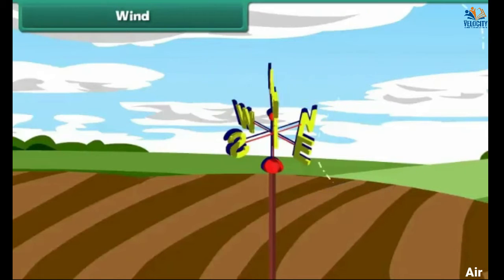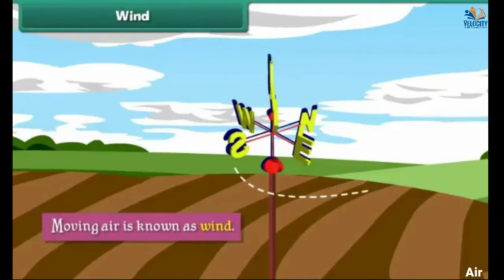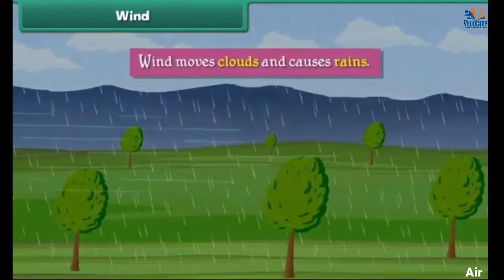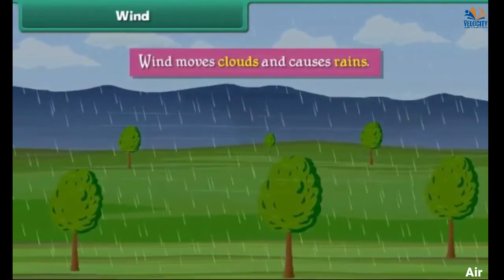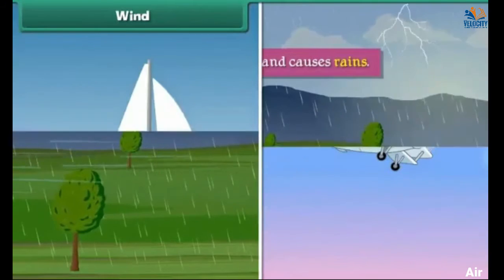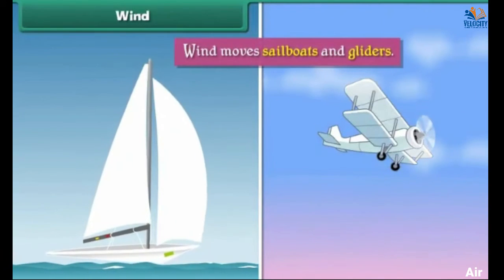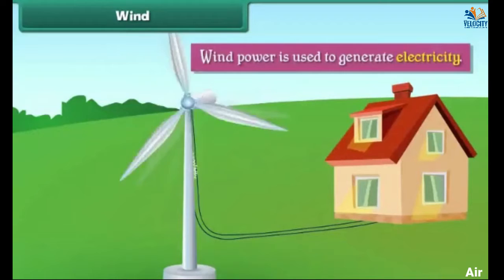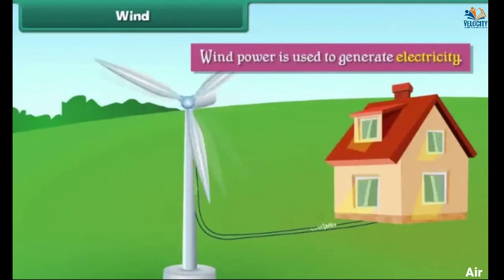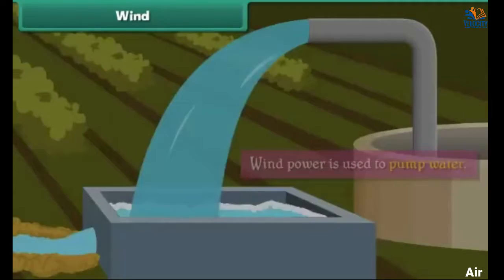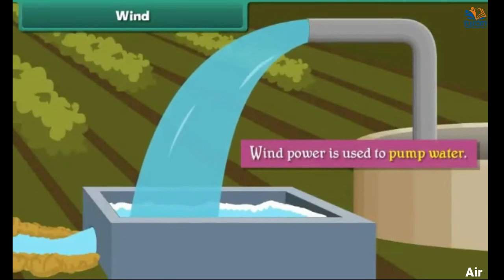Wind: Moving air is known as wind. Wind moves clouds and causes rain. Wind moves sailboats and gliders. Wind power is used to generate electricity and to pump water.